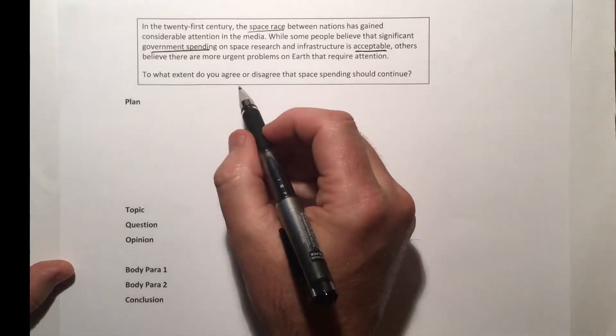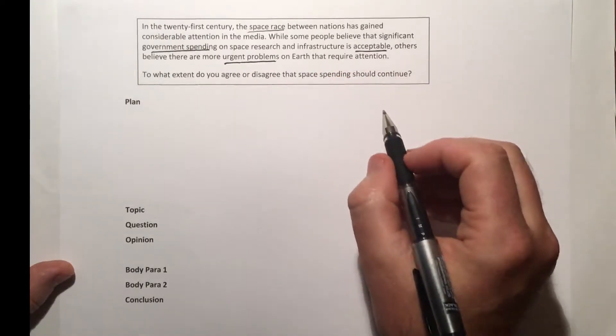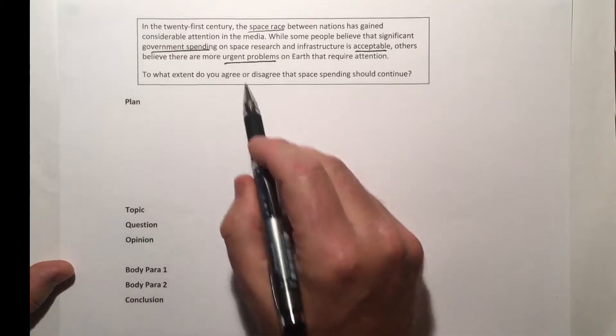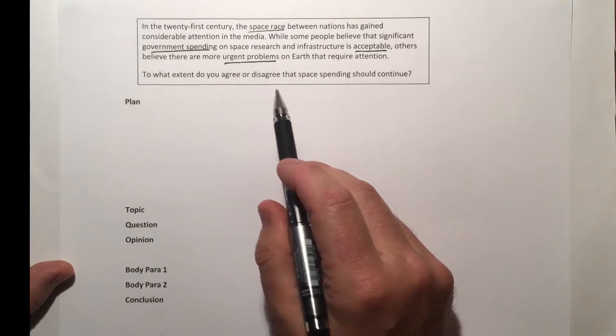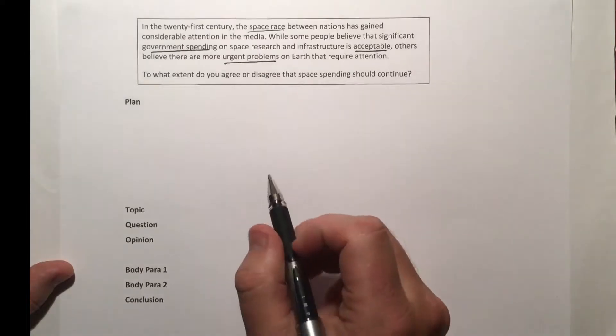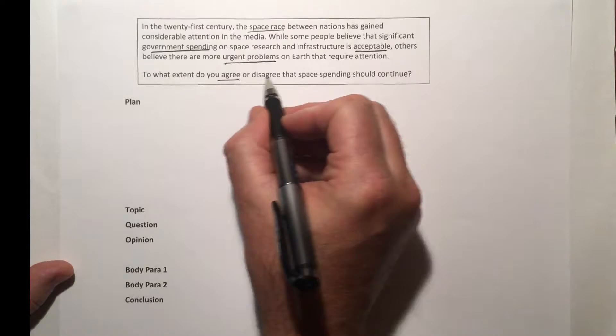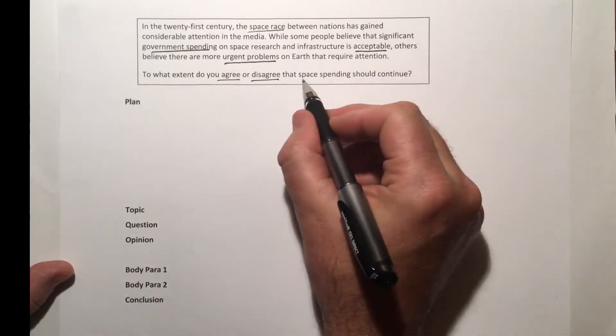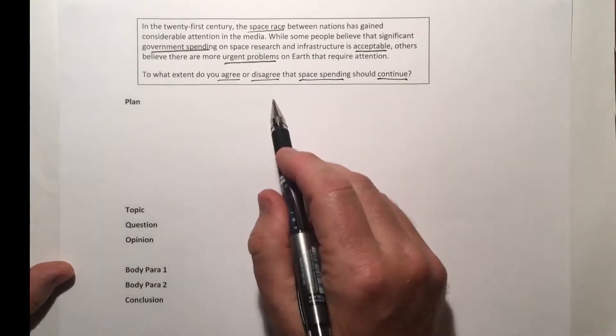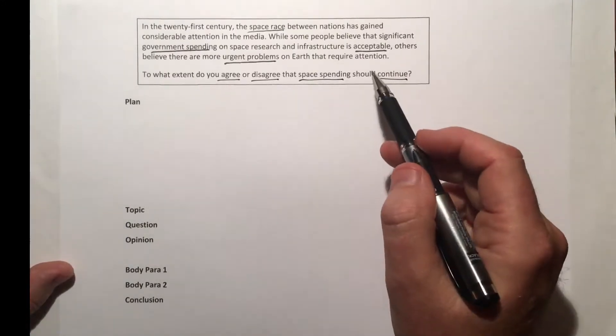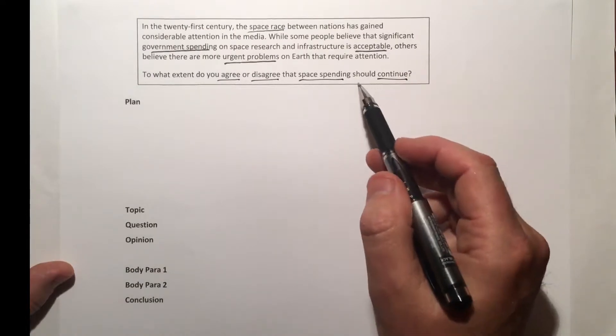others believe there are more urgent problems on Earth that require attention. We've got two different sides of an argument, which is very clear and we can often see this in IELTS. The question is: to what extent do you agree or disagree that space spending should continue? Should it continue, or should we be spending more on Earth and daily life?